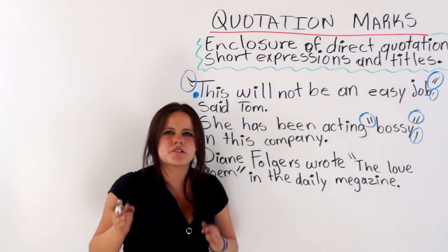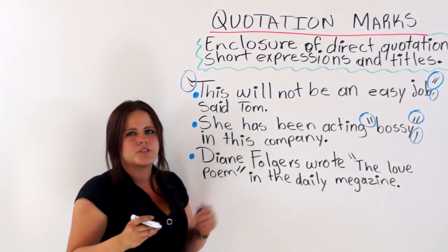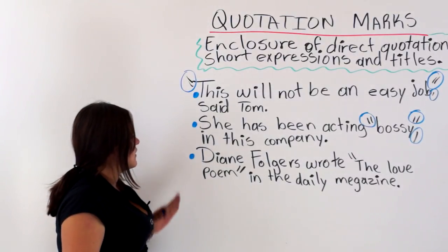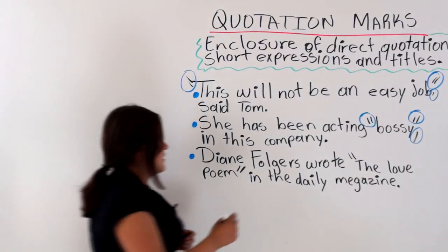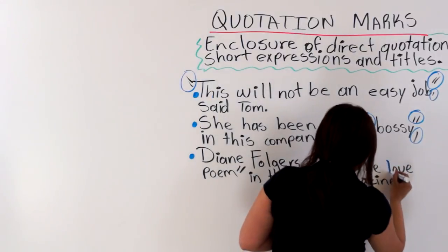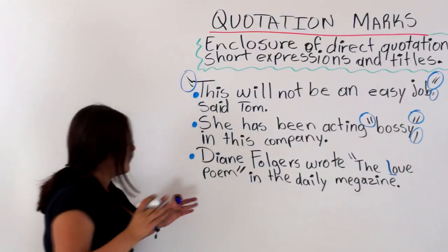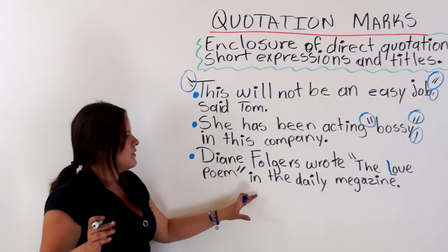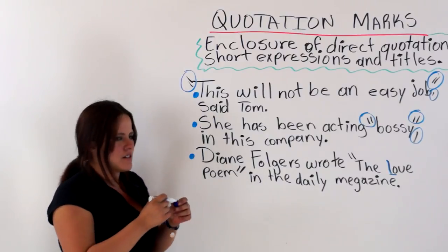Remember that commas and periods always go inside of the quotation marks you are using. The next one says: Diane Folgers wrote 'The Love Poem in the Daily Magazine.' This should be capitalized too because it is a title. So we are enclosing the title of an article in a magazine.